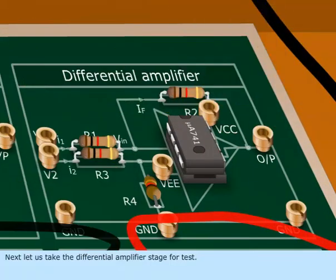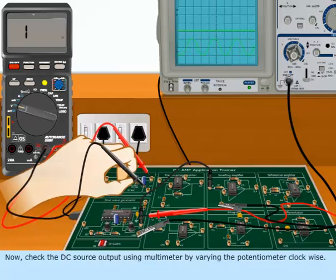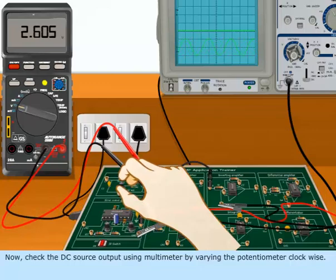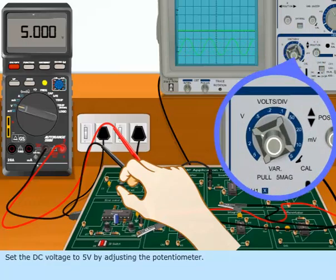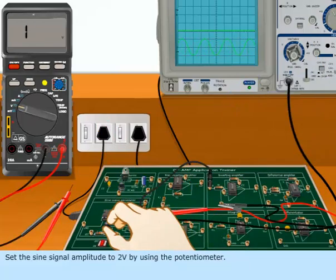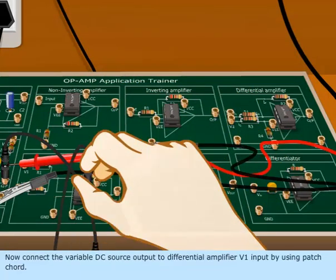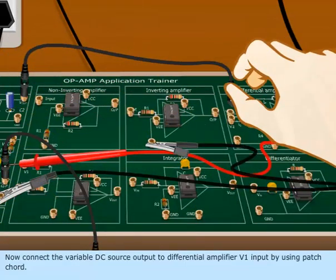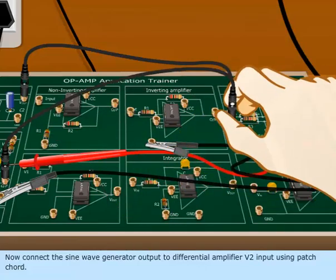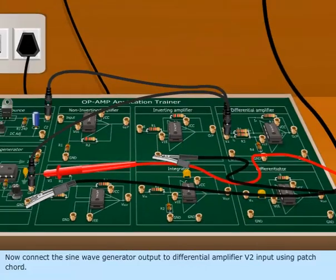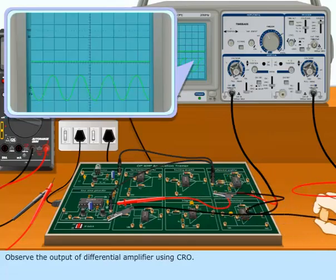Next, let us take the Differential Amplifier stage for test. Check the DC source output using multimeter by varying the potentiometer clockwise. Set the DC voltage to 5 volts by adjusting the potentiometer. Set the sine signal amplitude to 2 volts using the potentiometer. Now connect the variable DC source output and the sine wave generator output to the Differential Amplifier inputs using patch cords.